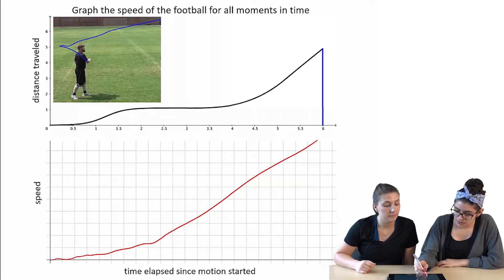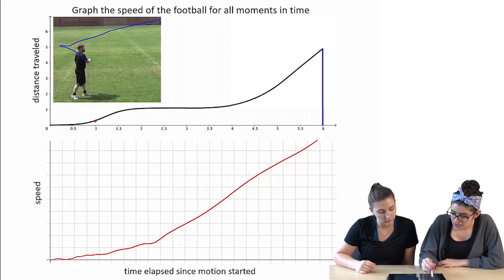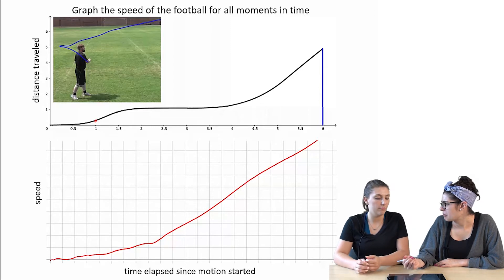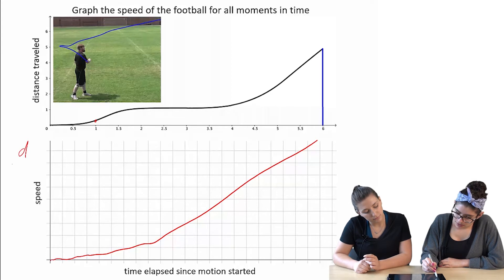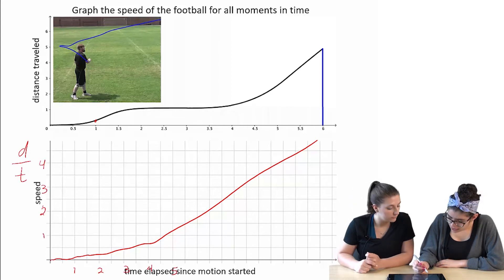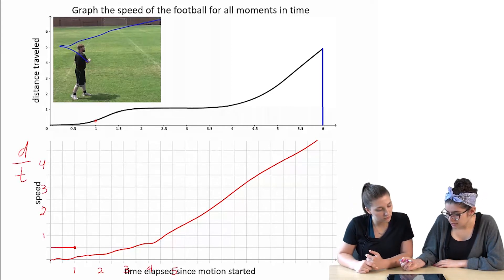So if we take, at one second, the distance is about a half. Yeah. So a half over one second would be a half speed. A half... Because speed is distance over time? Yeah. That's what I'm thinking. So we're looking for distance over time. If at one second it's a half, it'll be here.